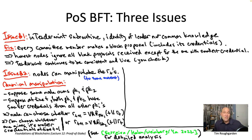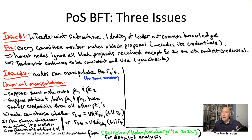As this decade goes on, we may see upgrades that totally eliminate any possibility of manipulation. That would probably require one of two experimental approaches discussed in part two: solutions to single secret leader election (SSLE), and/or the use of verifiable delay functions (VDFs).